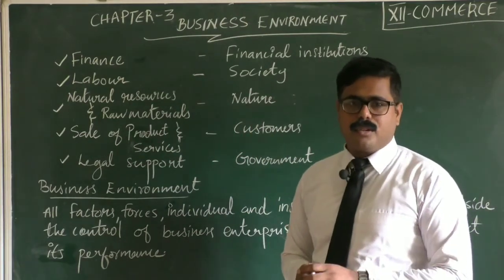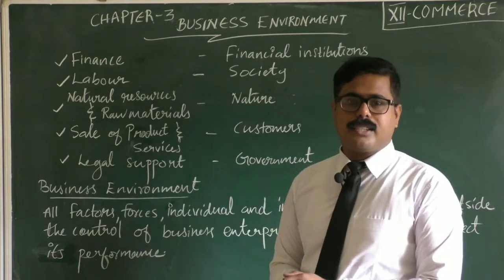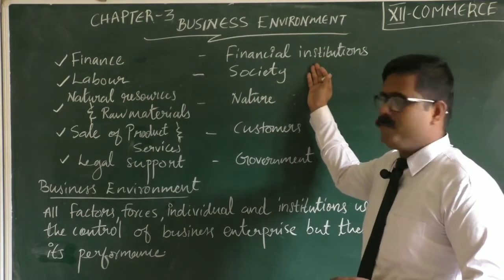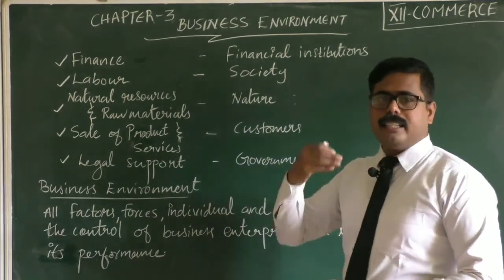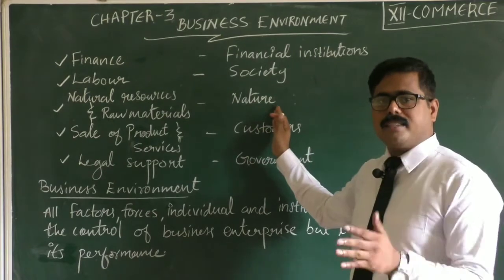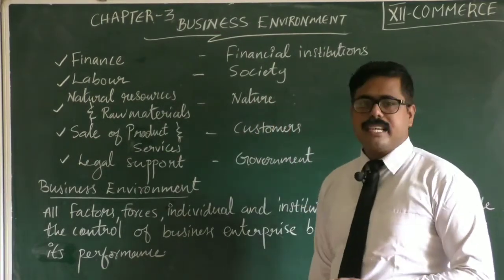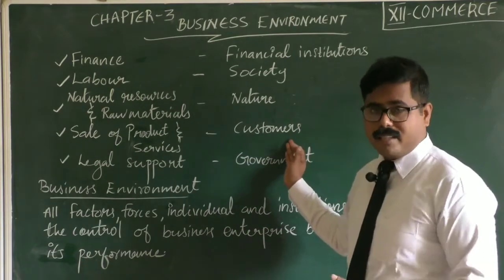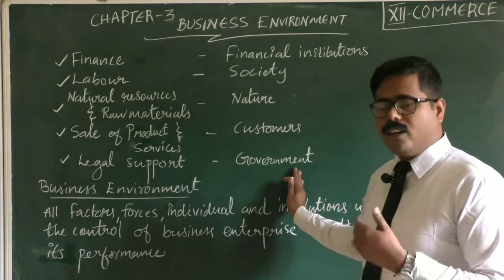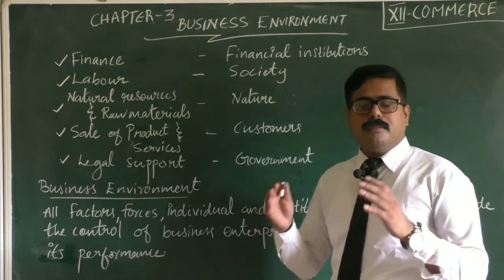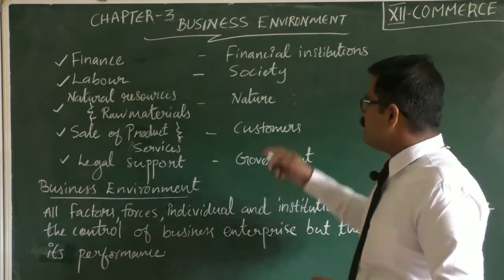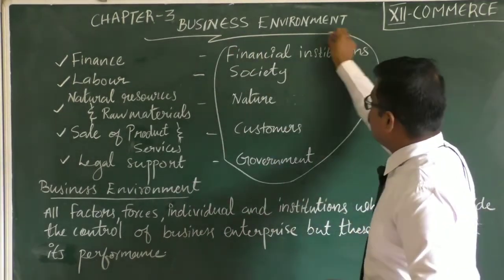The first factor is finance — finance is the backbone of a business organization, so for finance it needs to depend upon financial institutions. The next one is labor — for that it needs to depend upon society. They depend largely on nature for natural resources and raw materials. They depend on customers largely for the sale of goods, products and services. And they depend on the government for legal support. So business organizations depend on many factors for their successful running.